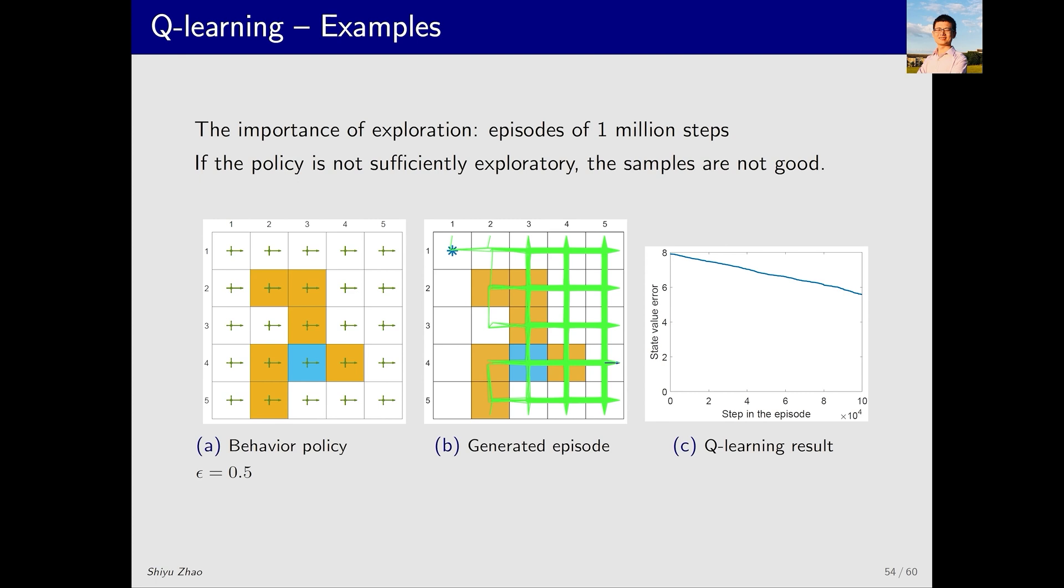The behavior policy we just used is highly exploratory. In our task, we need to find the optimal policy for each state-action pair, which means we need to visit all state-action pairs many times. Therefore, it would be best if the behavior policy is highly exploratory. When it's not very exploratory, let's see the following example.